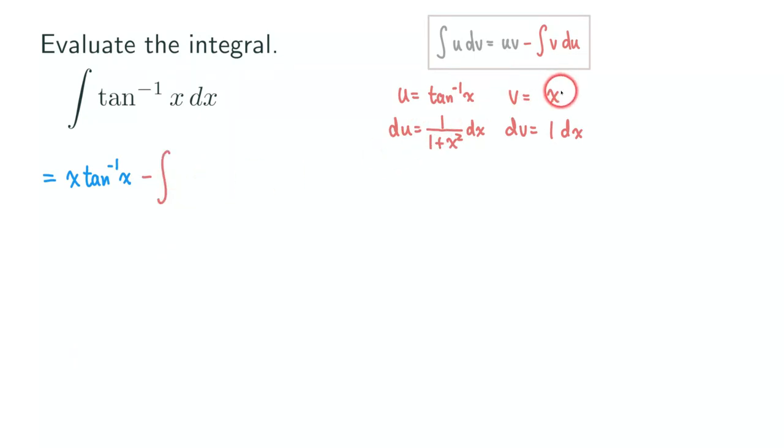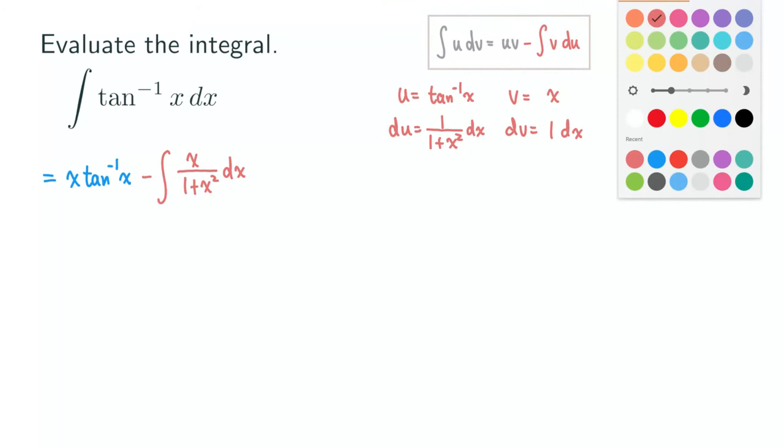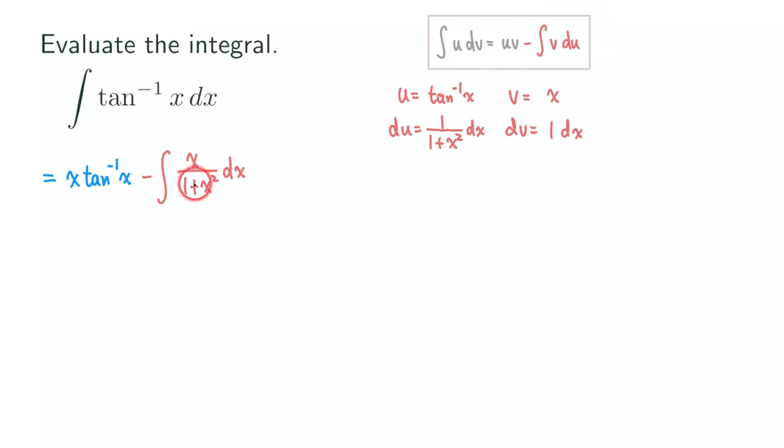What about the v, the v is the x, and then the du is 1 over 1 plus x squared dx, right? So you're going to multiply the x by the 1 over 1 plus x squared, which is x over 1 plus x squared, and then the dx. Okay, so as you can see here, we are going to, we need to actually do a u substitution on this to just integrate this function here.